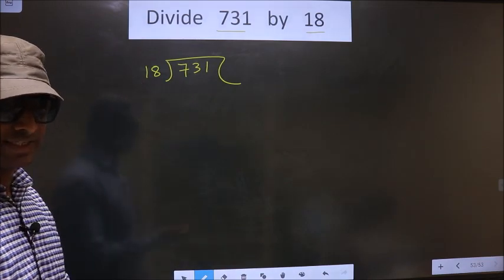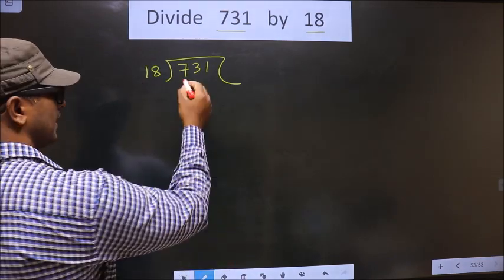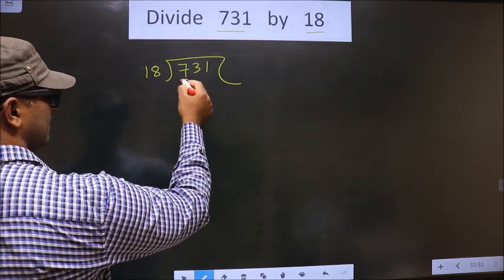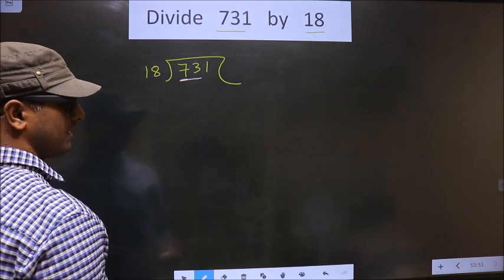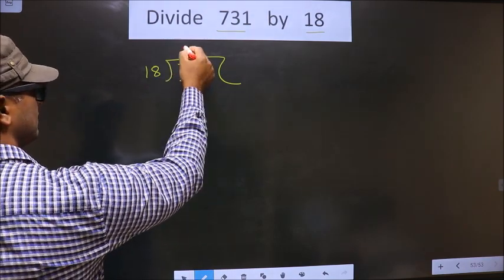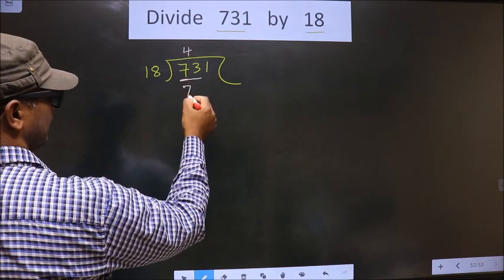Now here we have 7. 7 is smaller than 18, so we take two numbers, that is 73. A number close to 73 in the 18 table is 18 times 4 equals 72.